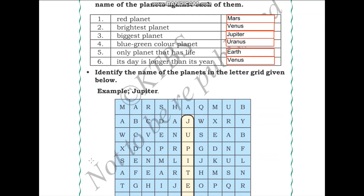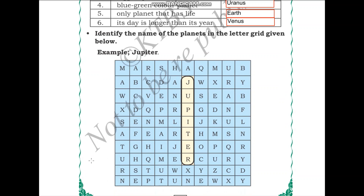Identify the names of the planets in the grid given below. I will teach you how to do three and you can do the rest. They have already done Jupiter. The first one is Mercury — you can go searching for M's in this puzzle. Here: M, E, R, C, U, R, Y. That is Mercury.